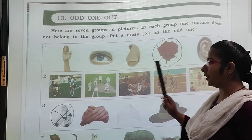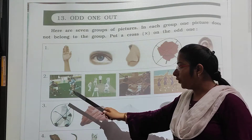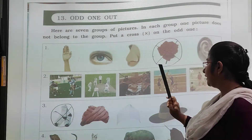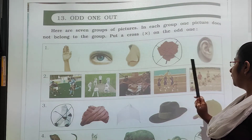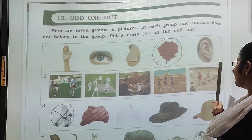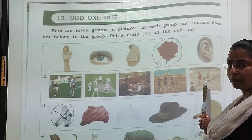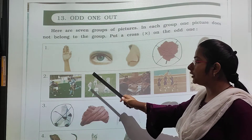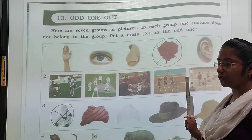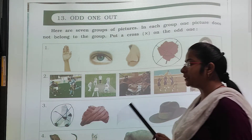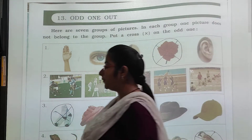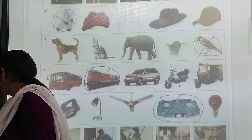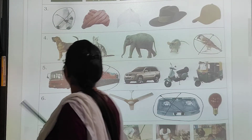In the second picture: hockey, cricket, carrom, football, cupboard. These all are outdoor games. Only carrom is an indoor game, so we will put the cross on the indoor game.